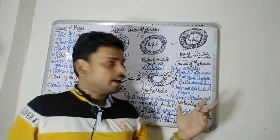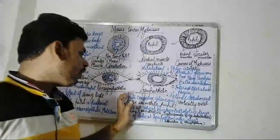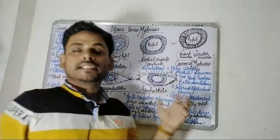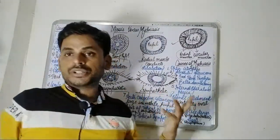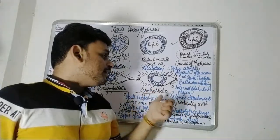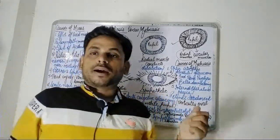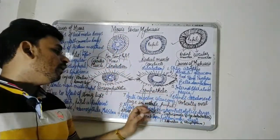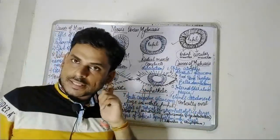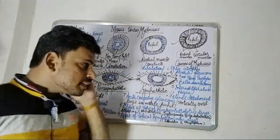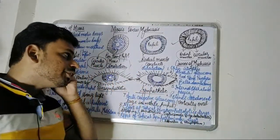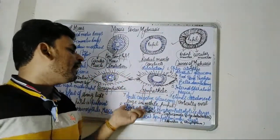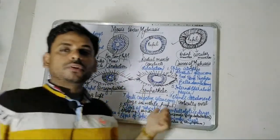The next causes of mydriasis include retinal detachment, and acute congestive glaucoma where a vertically oval, large, immobile pupil is present.